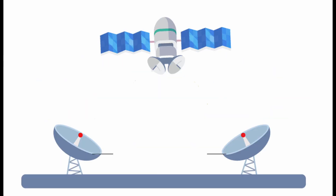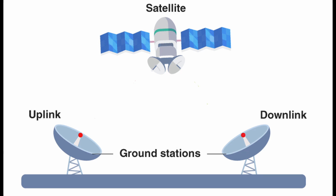For satellite communication to work, there needs to be three parts: the satellite, the transponder, the uplink, and the downlink. Two of these are situated at ground stations, except the satellite. First, you have the satellite uplink, where the signal is sent from the ground station to the satellite — for example, the TV signal.